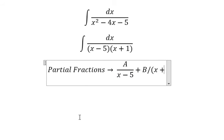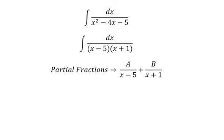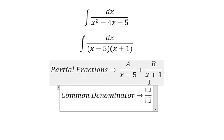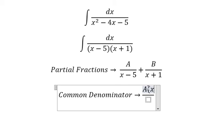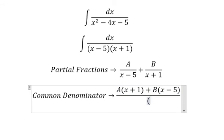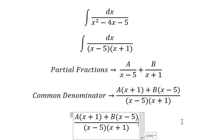Next, we need to do the common denominator. So we get A multiplied with (x+1), B multiplied with (x-5). Next, we need to expand this one.